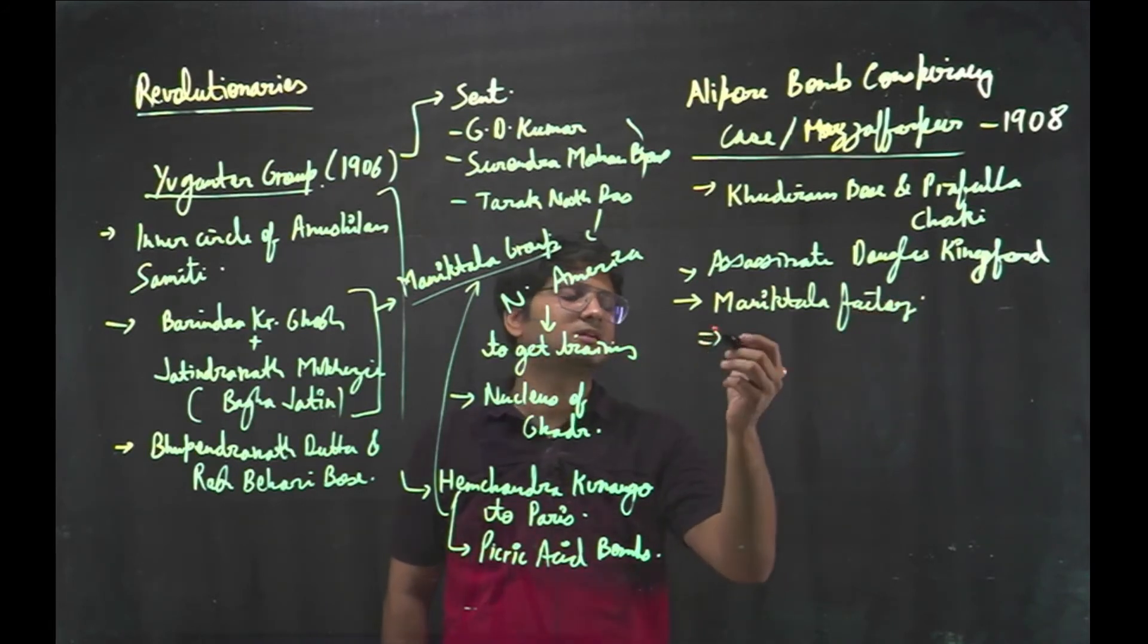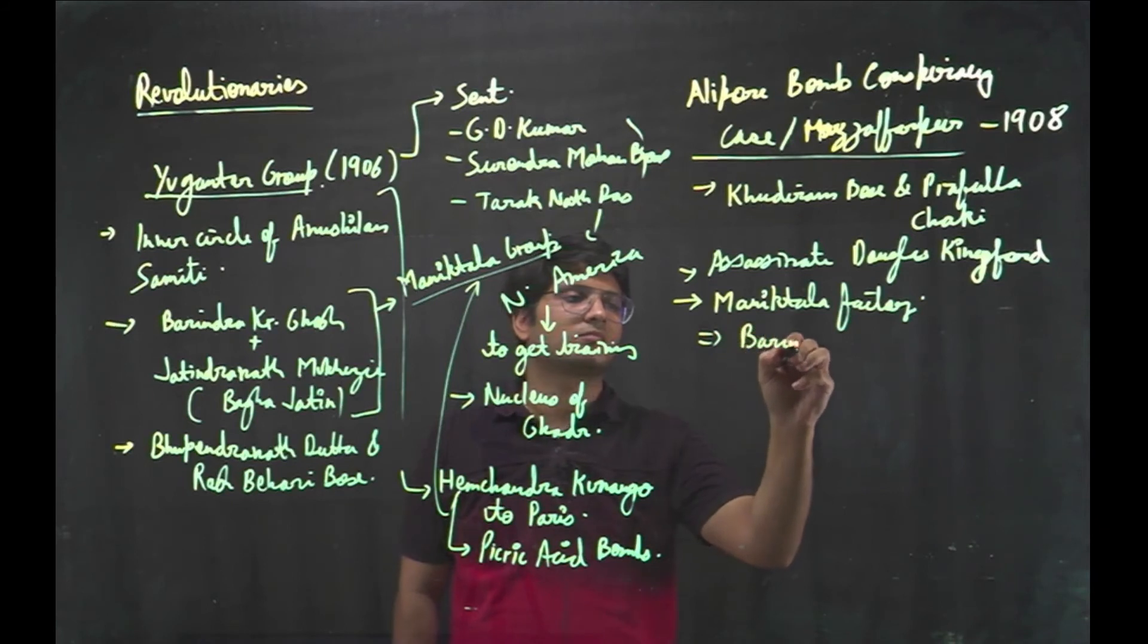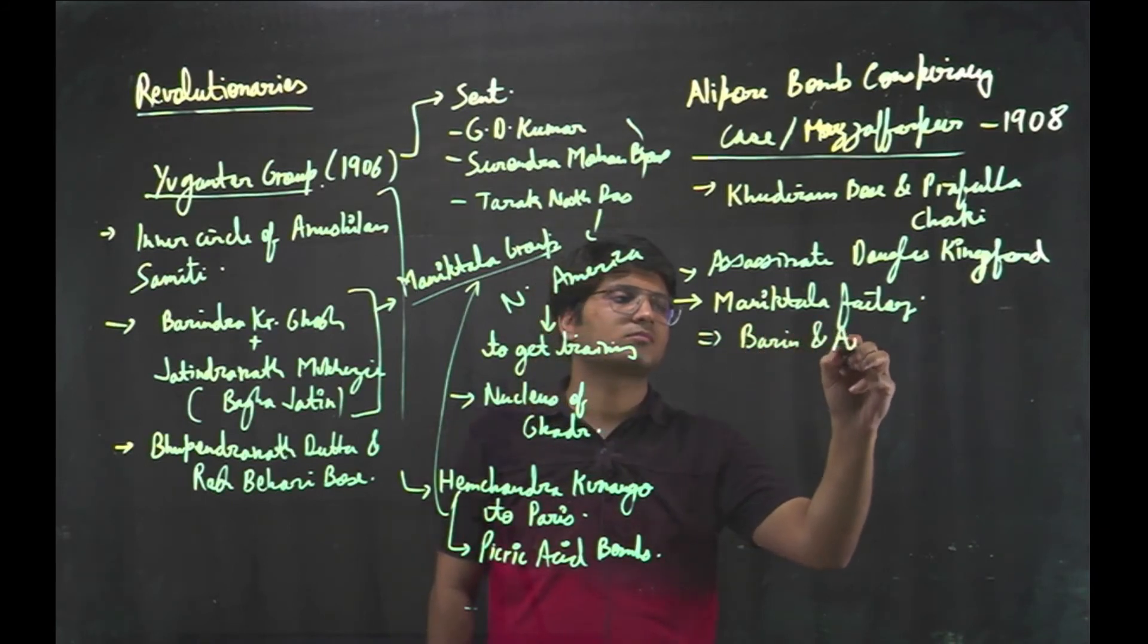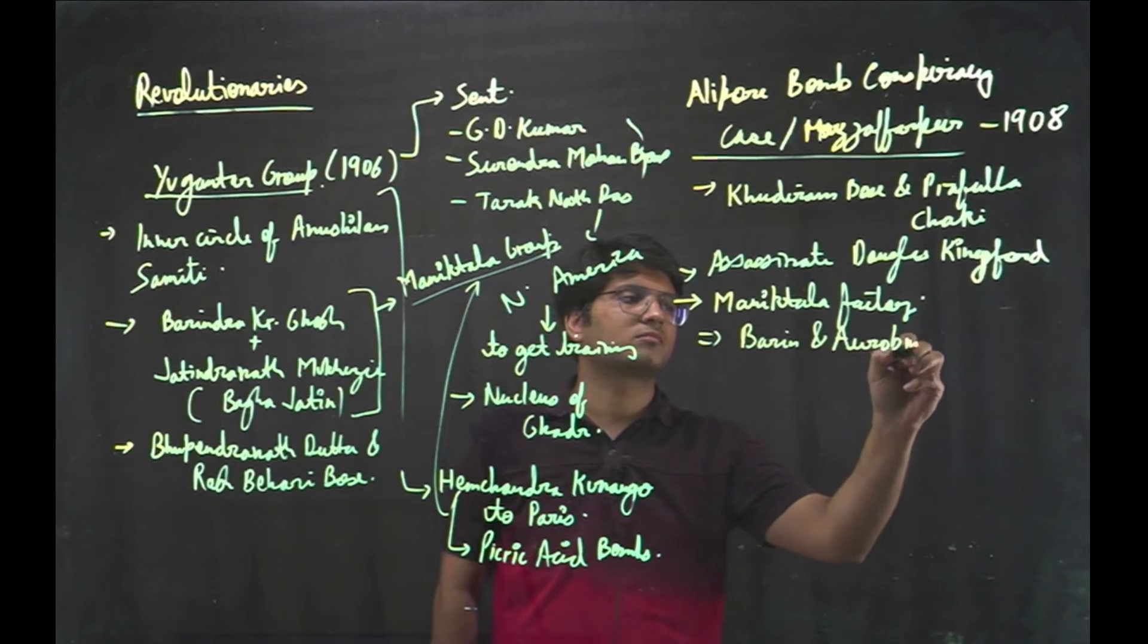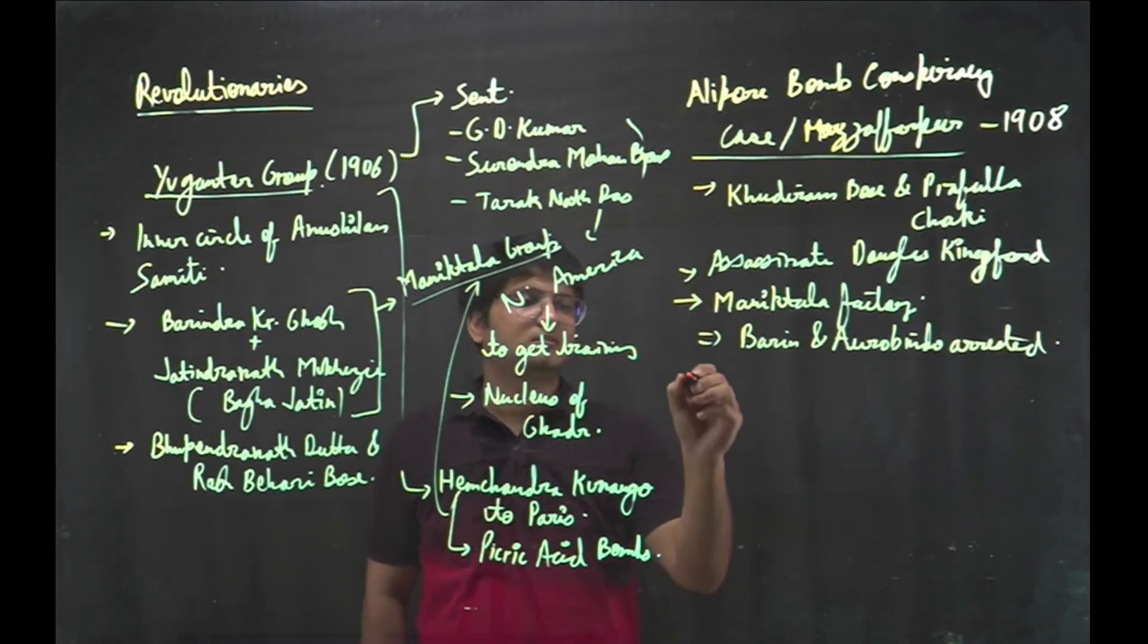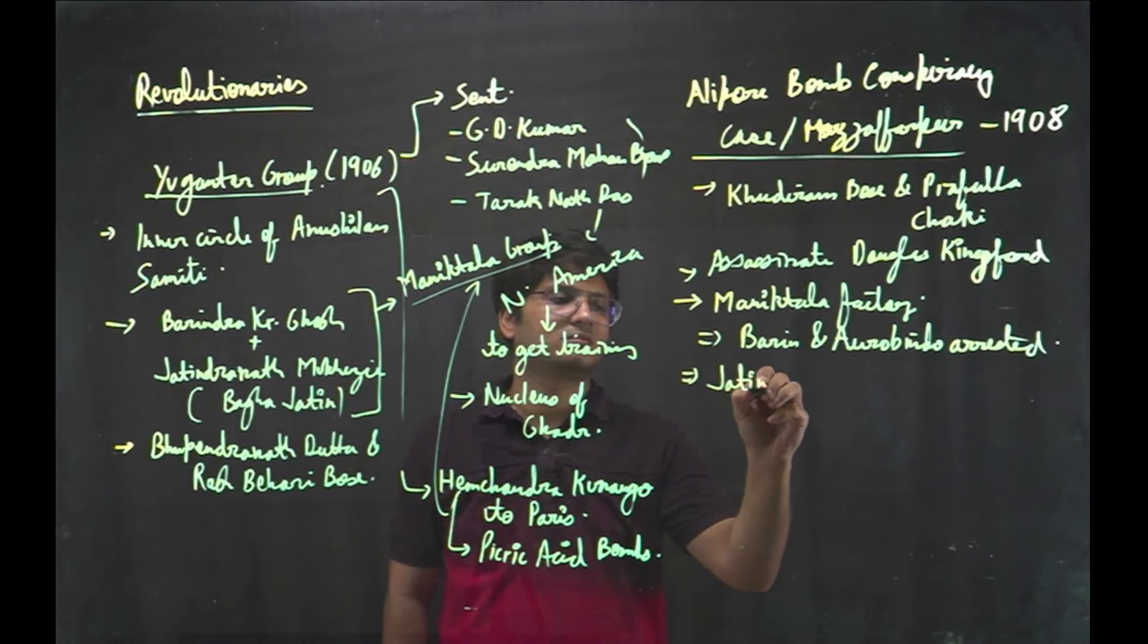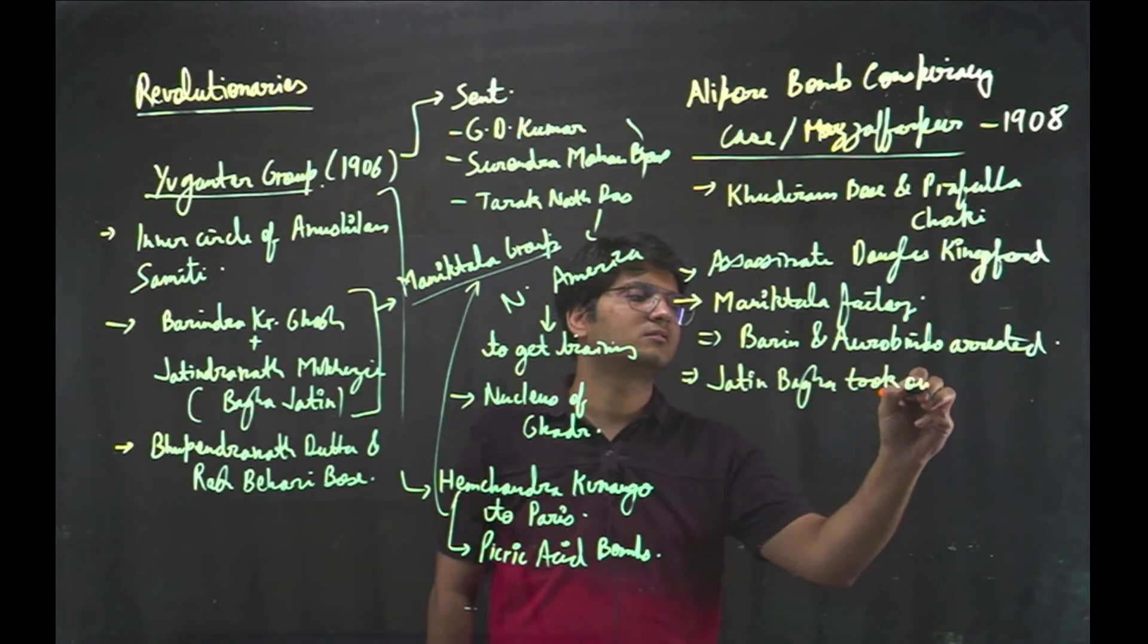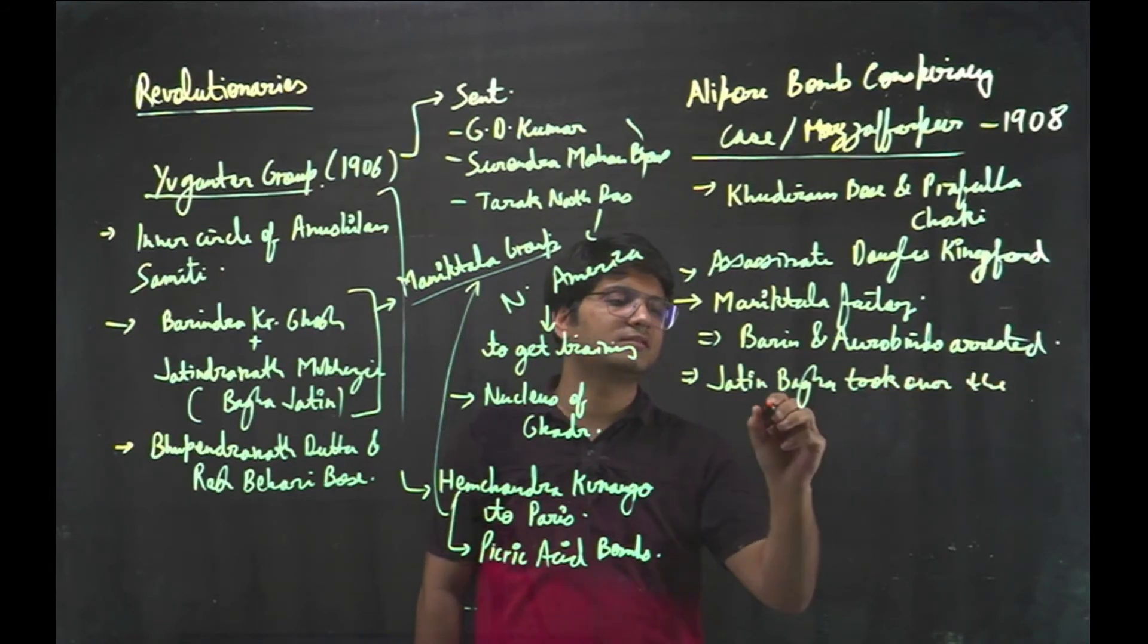Then both the Ghosh brothers were arrested. After that, Jatin Bagga took over the Yuga Antar group.